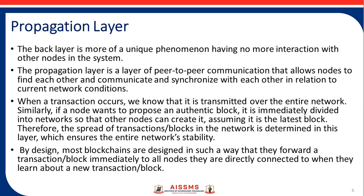If a node wants to propose an authentic block, it is immediately broadcast across the network so that nodes can accept it as the latest block. The spread of transactions or blocks across the network is determined in this layer, which ensures overall network stability. Most blockchains are designed so that they forward a transaction or block immediately to nodes they are directly connected to when they learn about a new transaction or block.